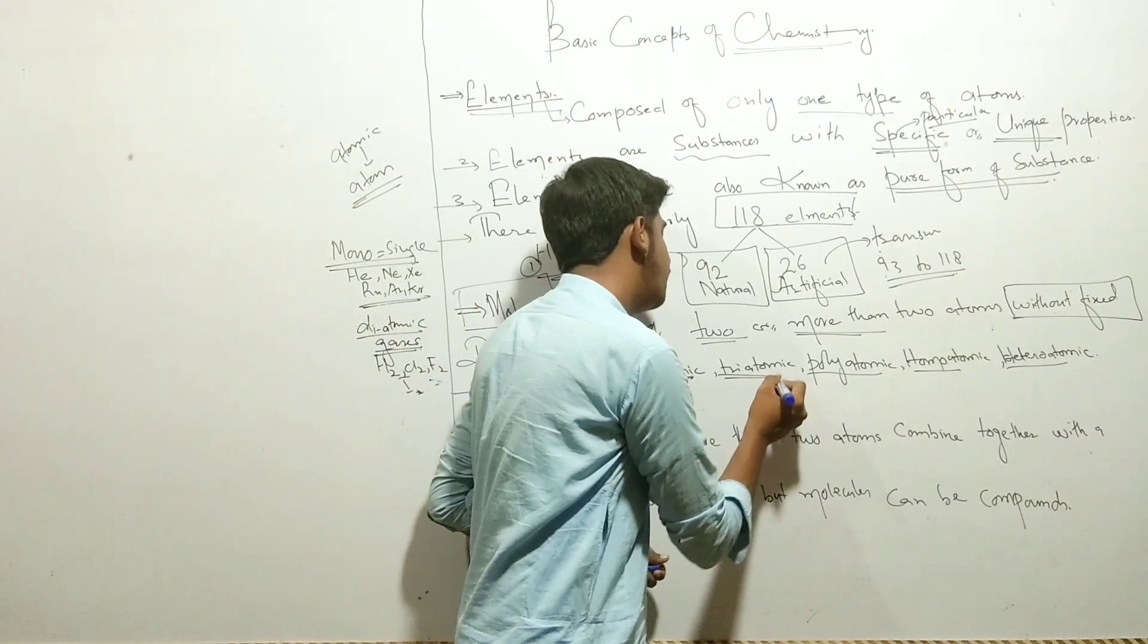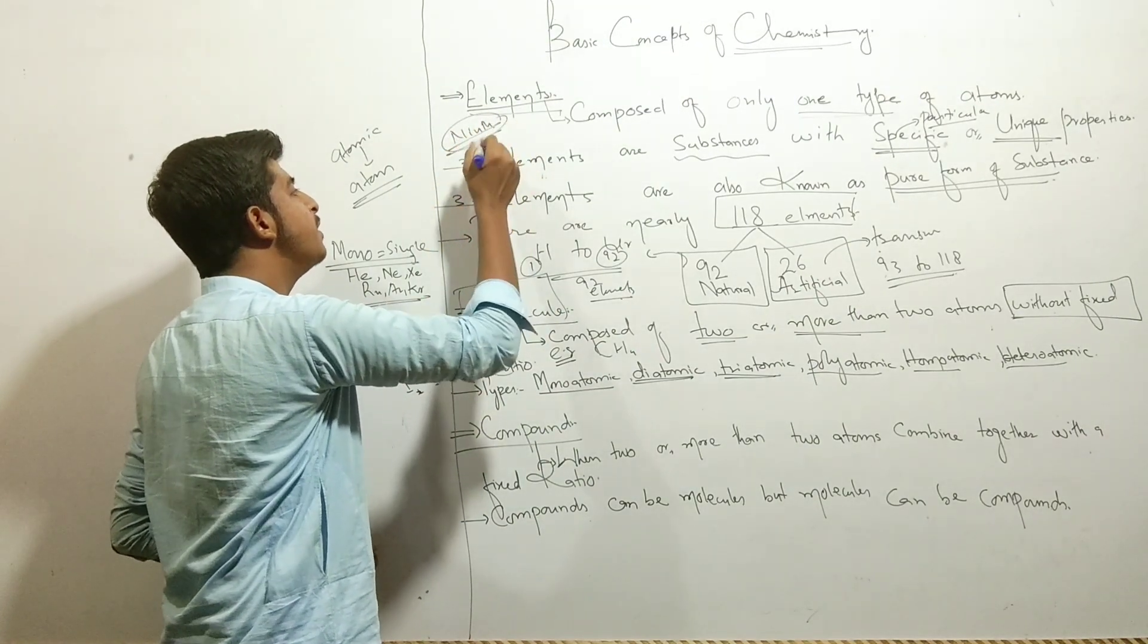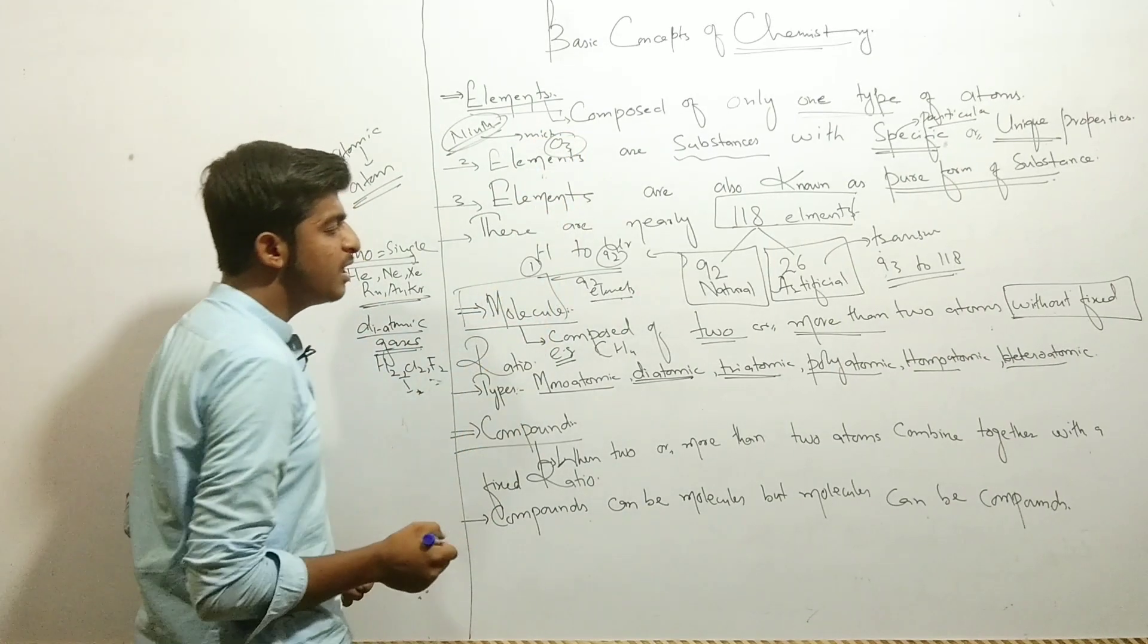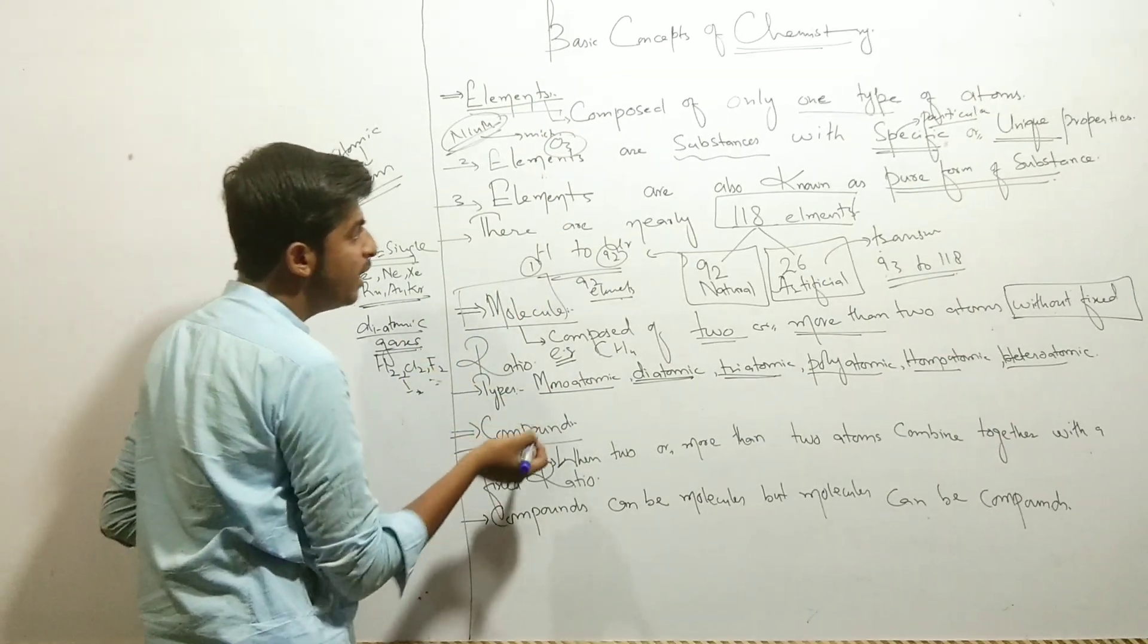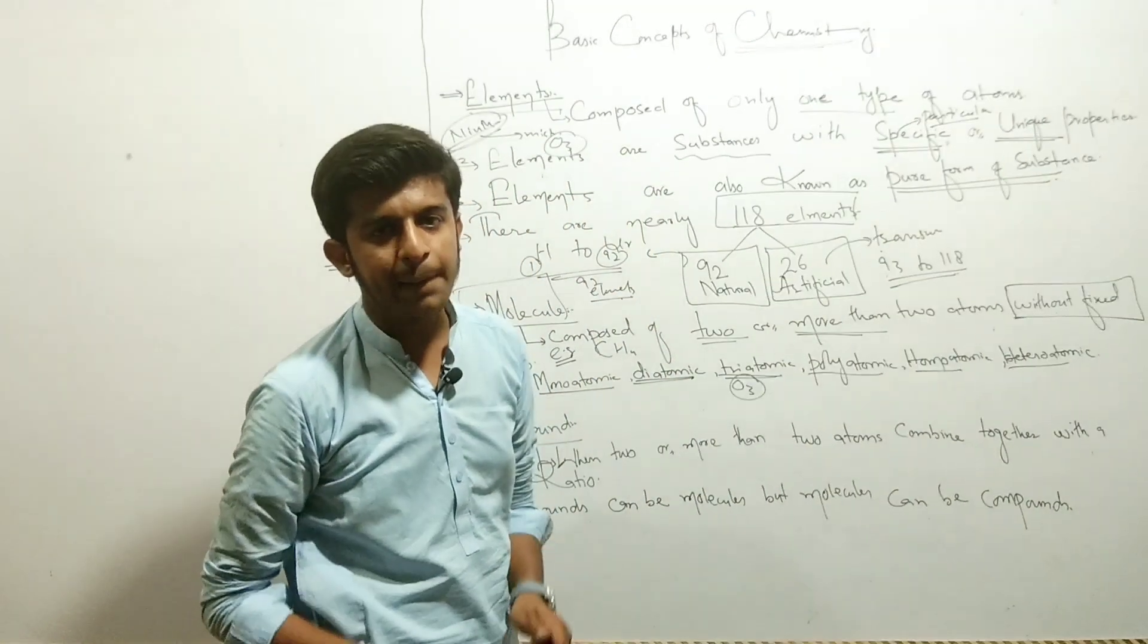After that triatomic. In the class 9th chemistry book, there's a fundamental mistake. The mistake is that they call O3, which is ozone, a polyatomic molecule, but this is actually a triatomic molecule.